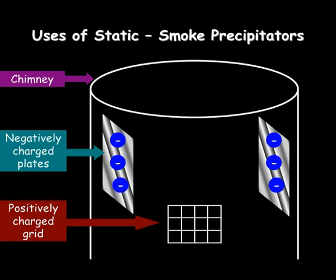You need to know about uses and dangers of static electricity, so here's one, and then you can apply it to the rest. Smoke precipitator — imagine this is the big cooling towers that you see next to power stations.